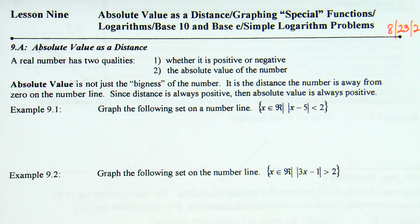A real number has two qualities: one is whether it is positive or negative, and the other is the absolute value of the number. What do you guys remember about absolute value? By verbal definition, it's distance from zero, and because it's a distance from zero, the absolute value of a number is always a positive value. Absolute value is not just the bigness of the number — it's the distance the number is away from zero on the number line. Since distance is always positive, the absolute value is always positive.